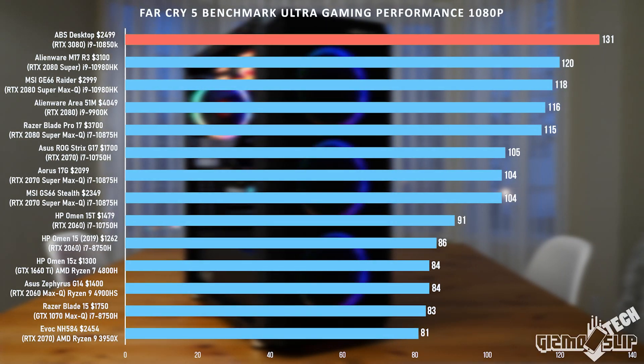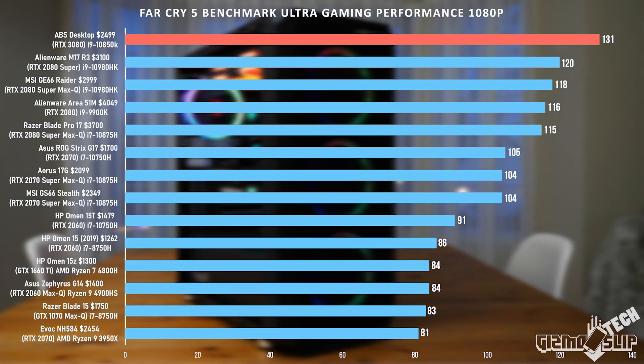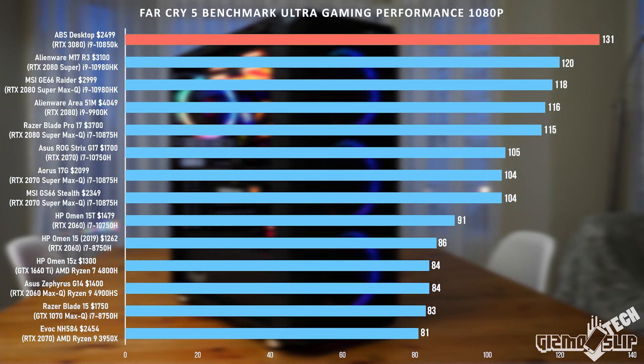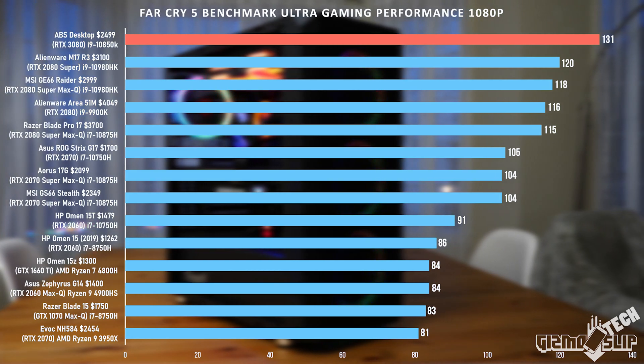Game performance can be bottlenecked by a number of different components on a system: do you have dual-channel memory, a powerful enough CPU, is the game optimized to take full advantage of GPU performance, and does it have RTX and DLSS enabled? A great example is in my recent review of an RTX 3080 desktop from ABS — in my Far Cry 5 benchmark at 1080p, we saw only an 11 fps gain over the RTX 2080 Super in my M17 R3. That's a difference between a laptop GPU and a desktop GPU, so it should theoretically be an even bigger difference, but it's not that big a jump because Far Cry 5 at 1080p is very CPU bottlenecked.